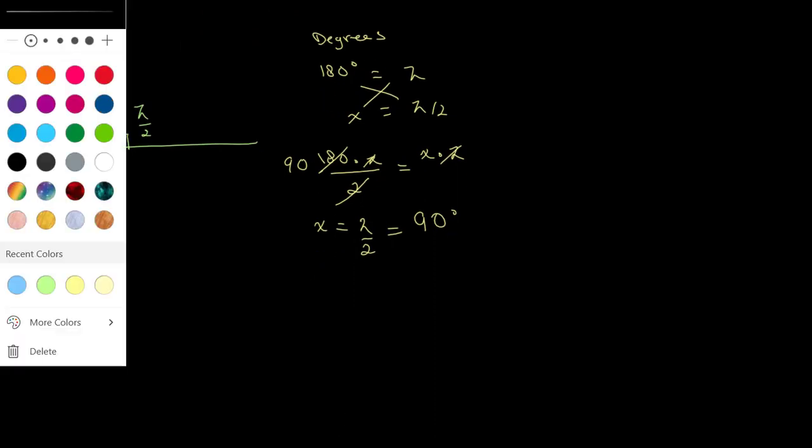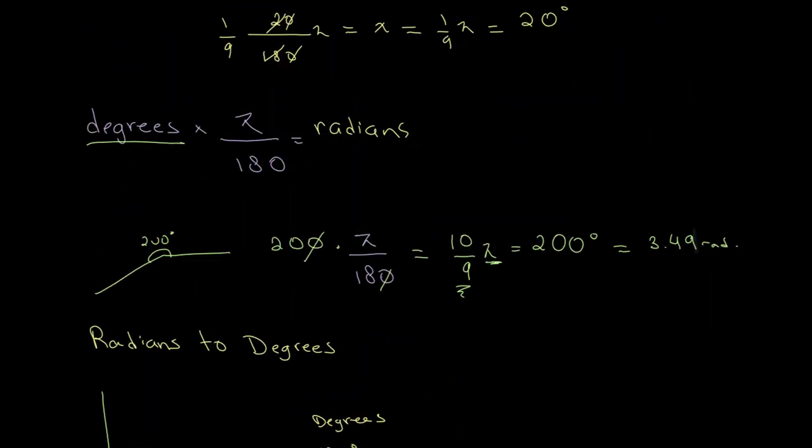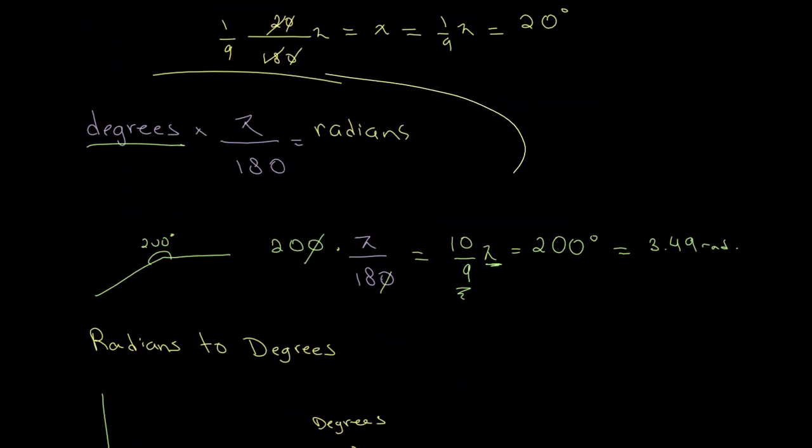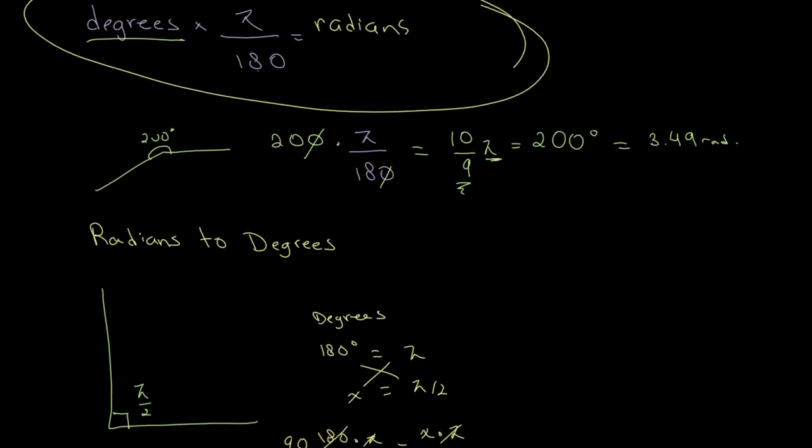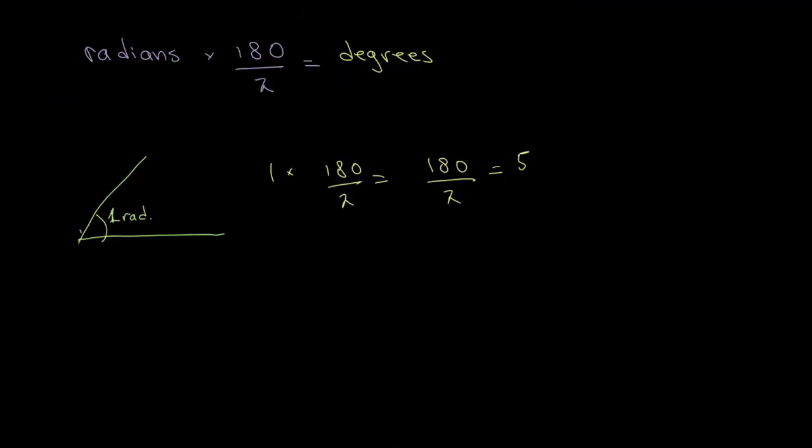And once again, we can use a formula to make this more straightforward. We can say that if we have a value in radians, we can multiply our value in radians by 180 over pi to get our answer in degrees. And it's pretty obvious that this is essentially the flip of what we have over here. While we multiplied degrees by pi over 180, we have to multiply radians by 180 over pi.